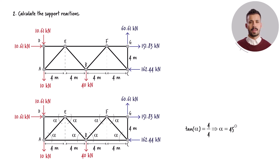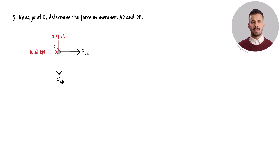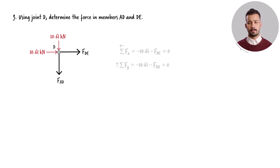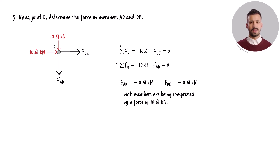We can now apply the equilibrium equations to the joints of the truss. Here is the free-body diagram of joint D. There are two unknown forces at this joint: the force in member AD and the force in member DE. The joint equilibrium equations are solved for the unknown forces. The sign associated with each force reveals if the member is experiencing tension or compression. A positive sign signifies tension, while a negative sign indicates compression. Therefore, both members AD and DE are in compression.